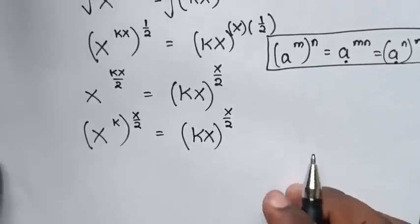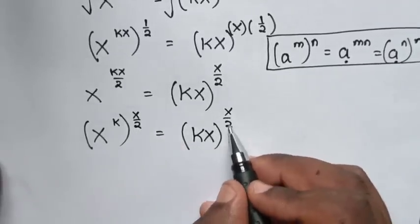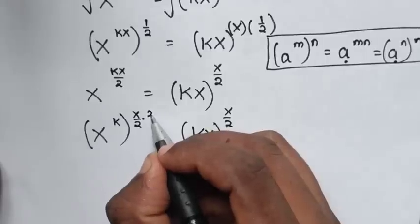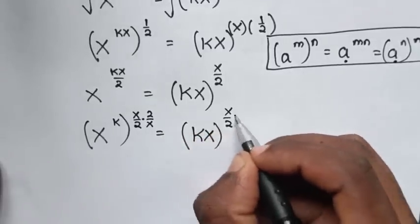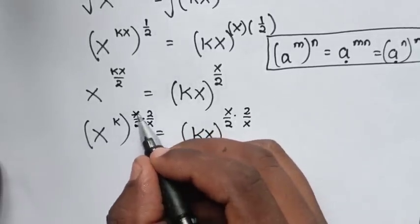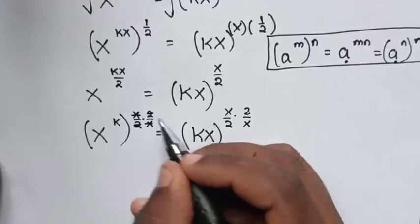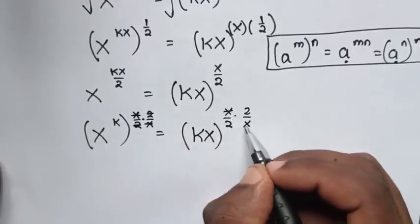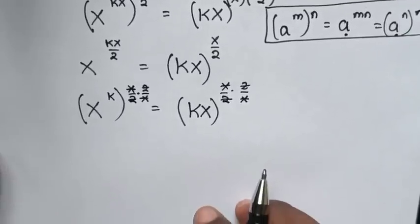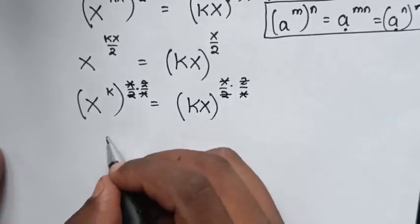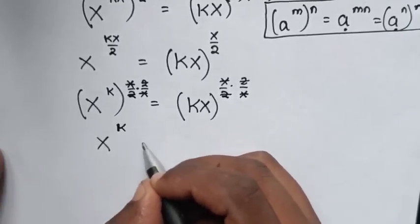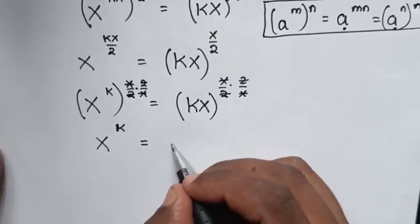Because power of x/2 is common, we multiply both sides by power of 2/x. The powers cancel on both sides, leaving our equation as x^k = kx.